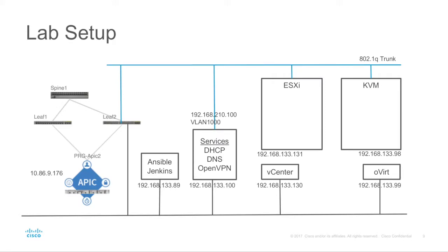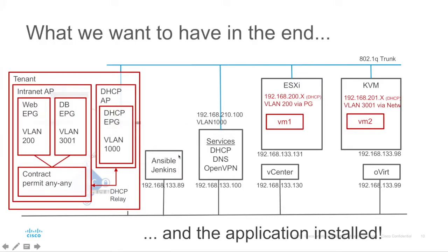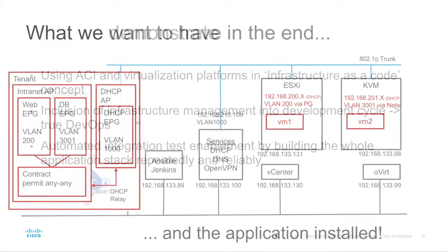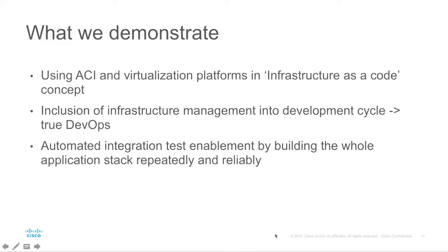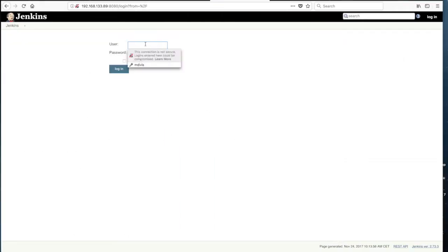Again, we start with an empty environment, pre-configured ACI, basic stuff in vCenter and KVM — the same application as we have seen through the operations demo. But on the Ansible server we have also installed Jenkins as a build server, and we will build the same environment as before. Through the pre-installed application packages, we will show how to do the application deployment through Jenkins. So let's go to Jenkins.